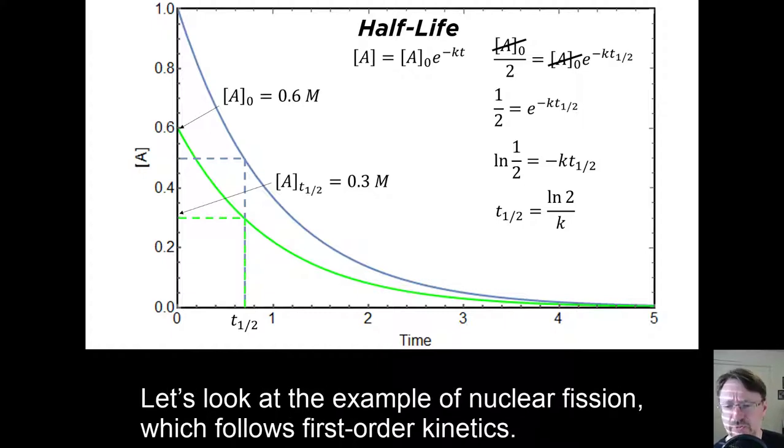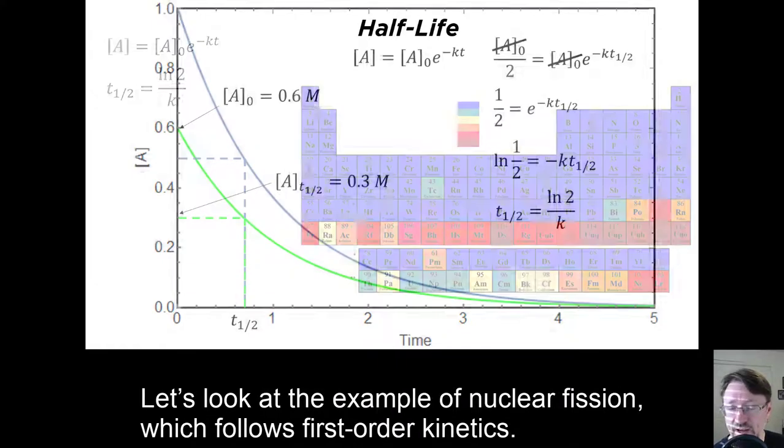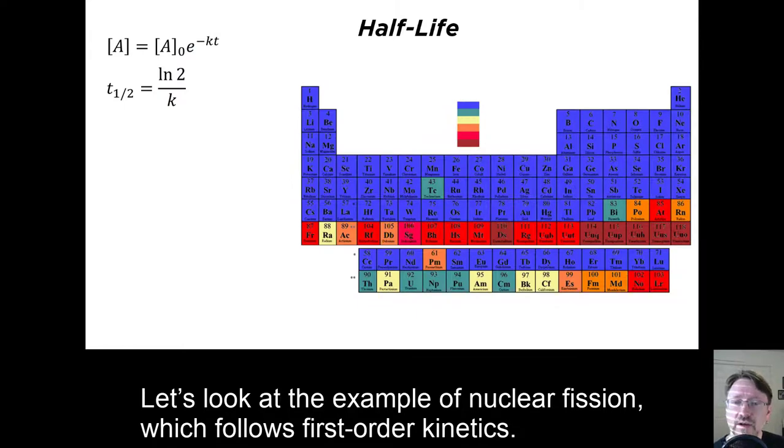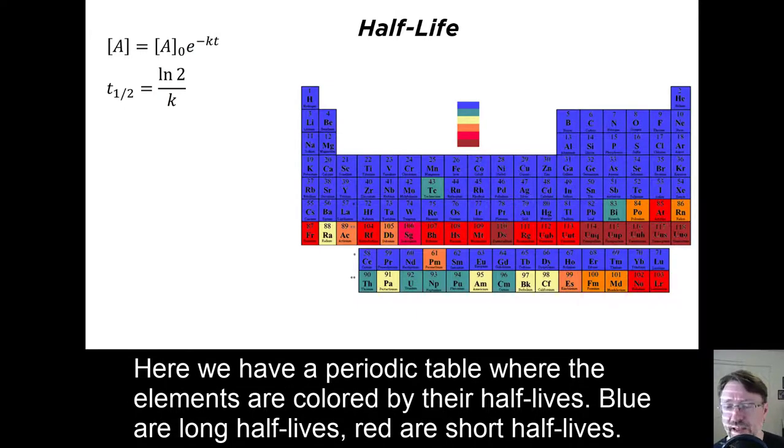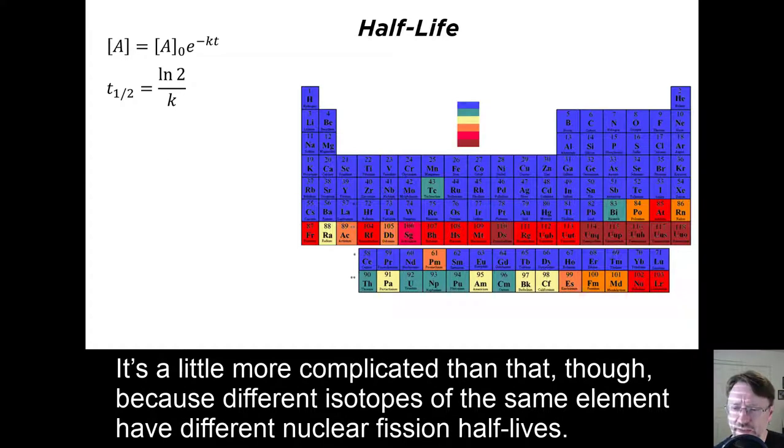Let's look at the example of nuclear fission, which follows first-order kinetics. Here we have a periodic table where the elements are colored by their half-lives. Blue are long half-lives, red are short half-lives. It's a little more complicated than that, though, because different isotopes of the same element have different nuclear fission half-lives.